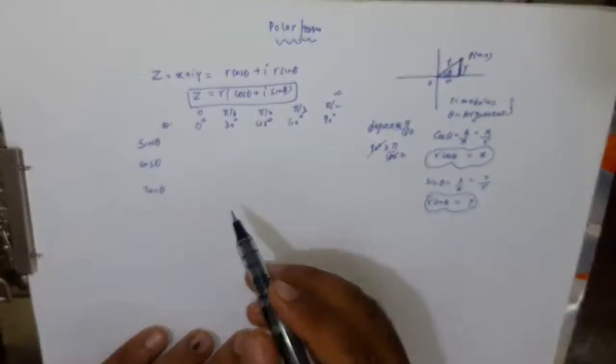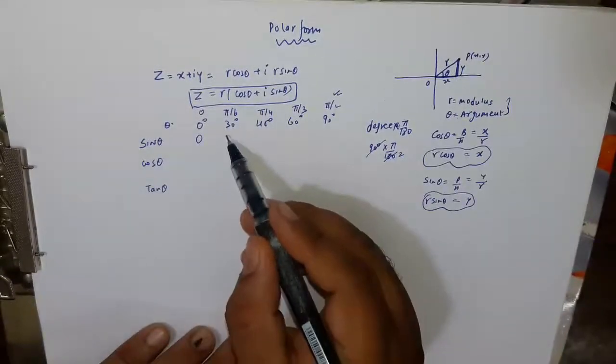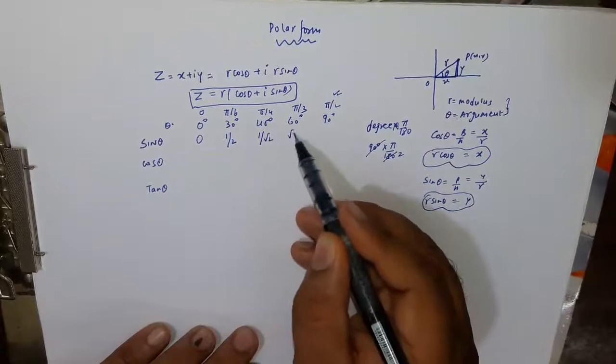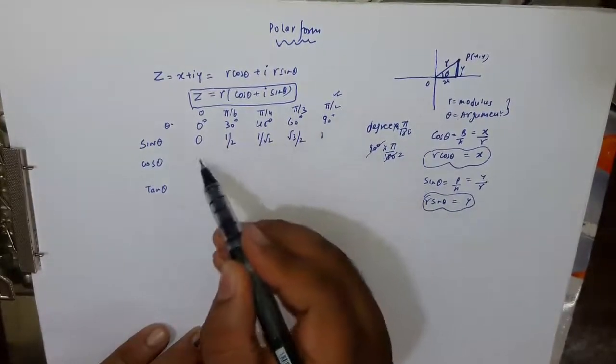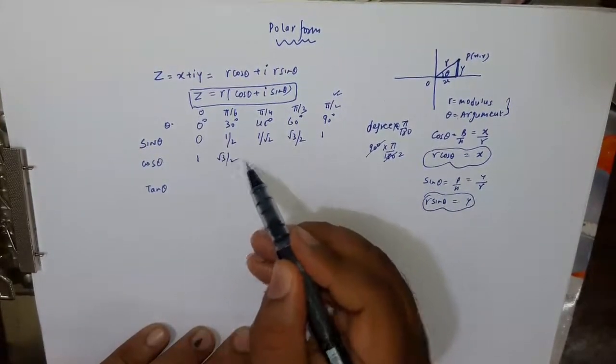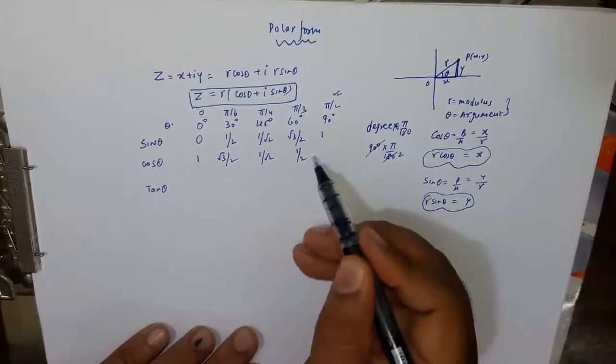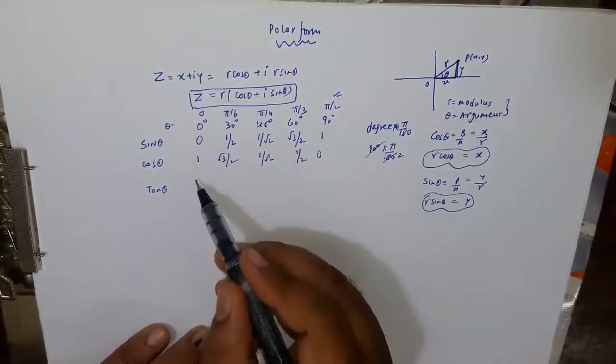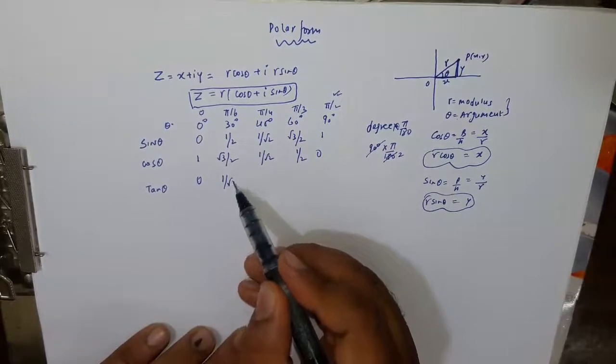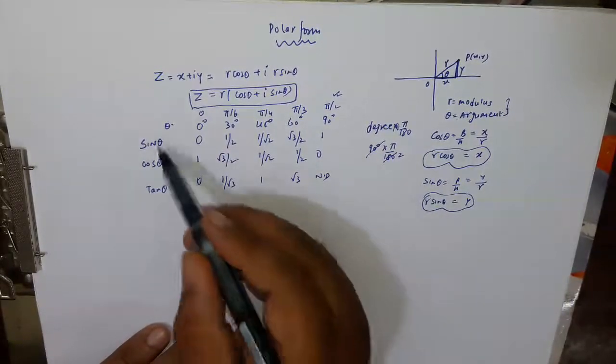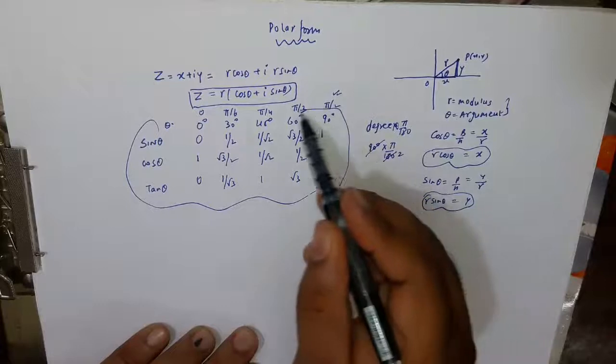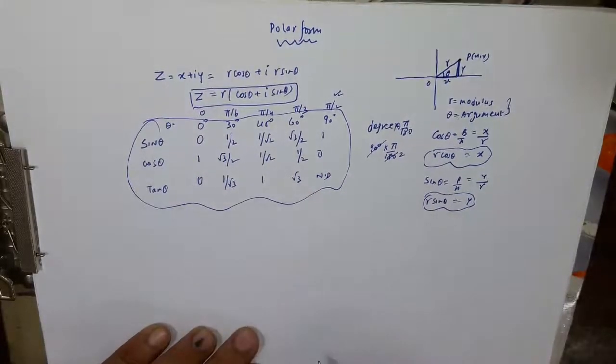Yahan pe value hoti hai, sine ki zero, one by two, one by root two, root three by two or one. Or cosine ka reverse order one, root three by two, one by root two, one by two and zero. Tan sine or cos ka division hota hai, zero, one by root three, one, root three and not defined. So before going to the questions, you must know these values ki kahan pe kaunsi value hoti hai.